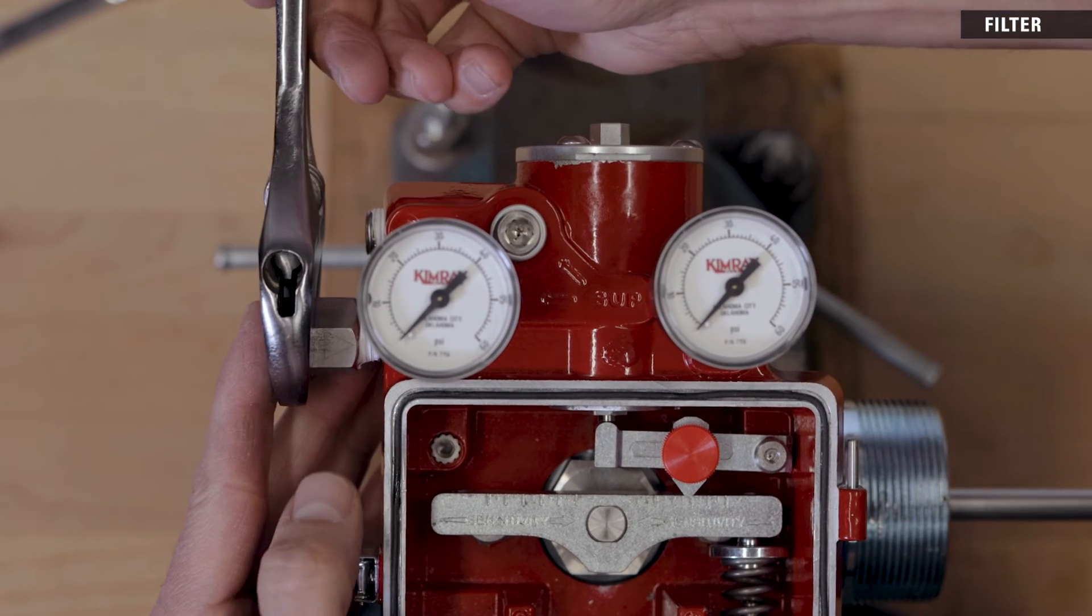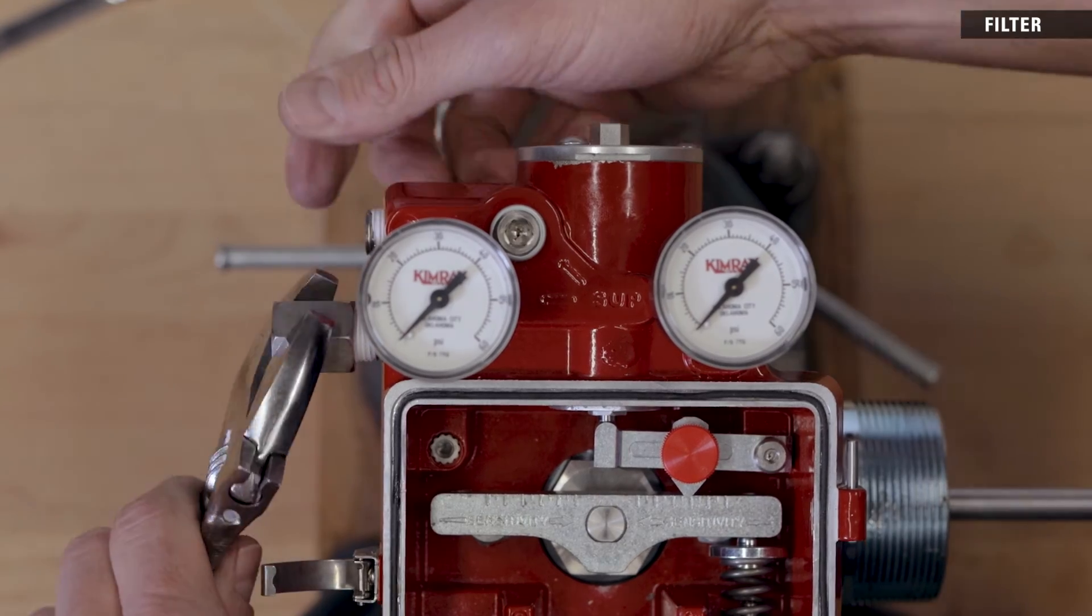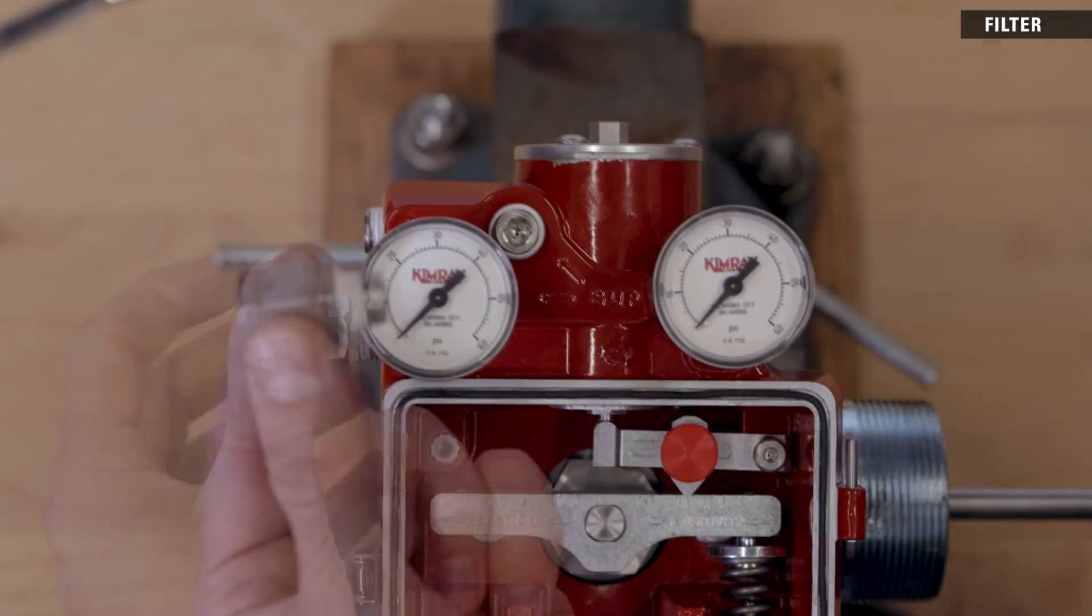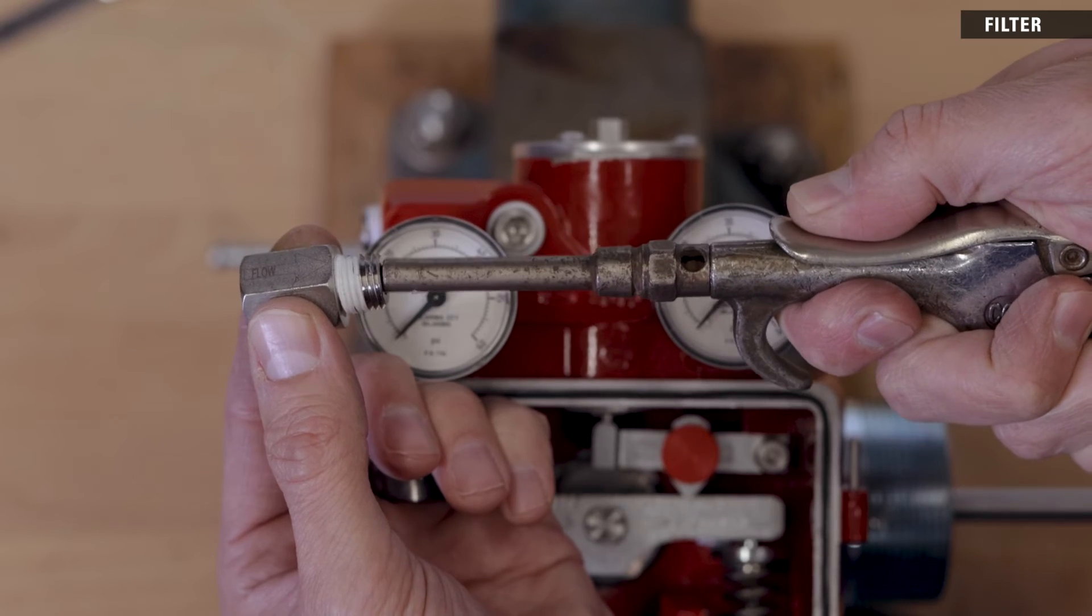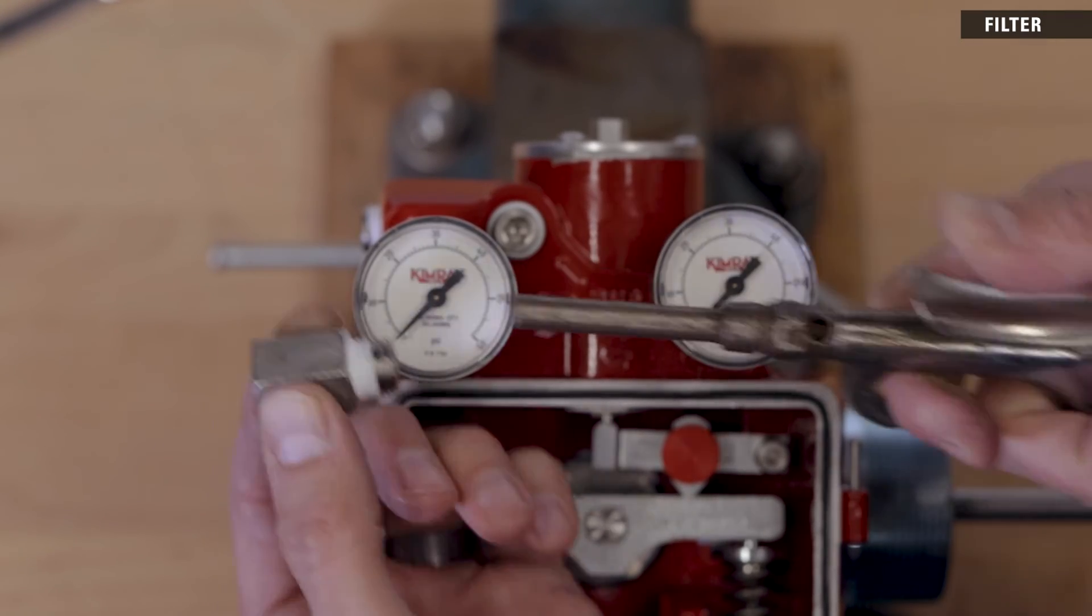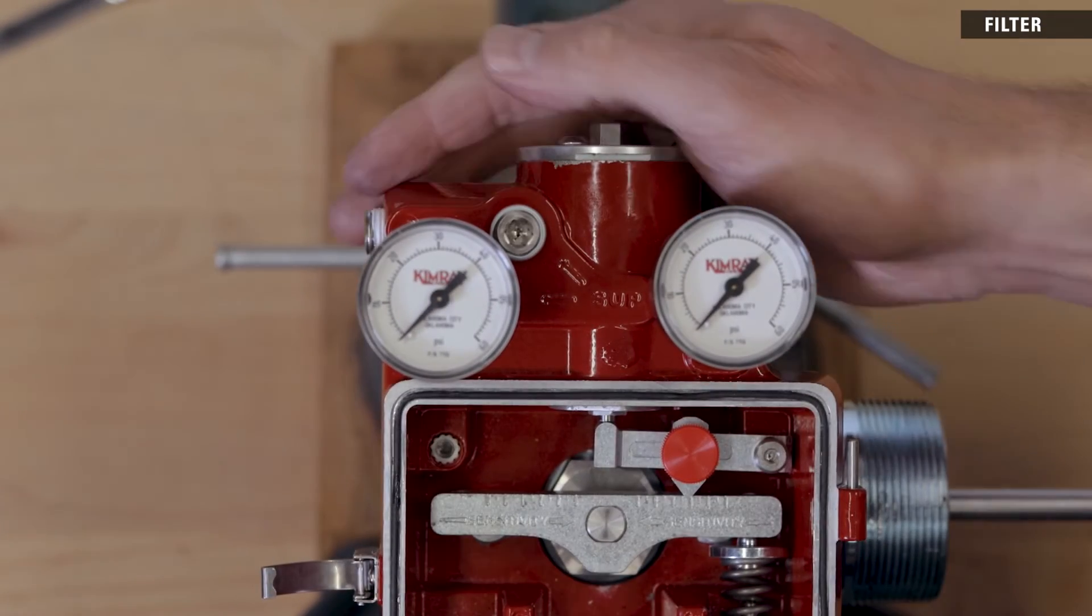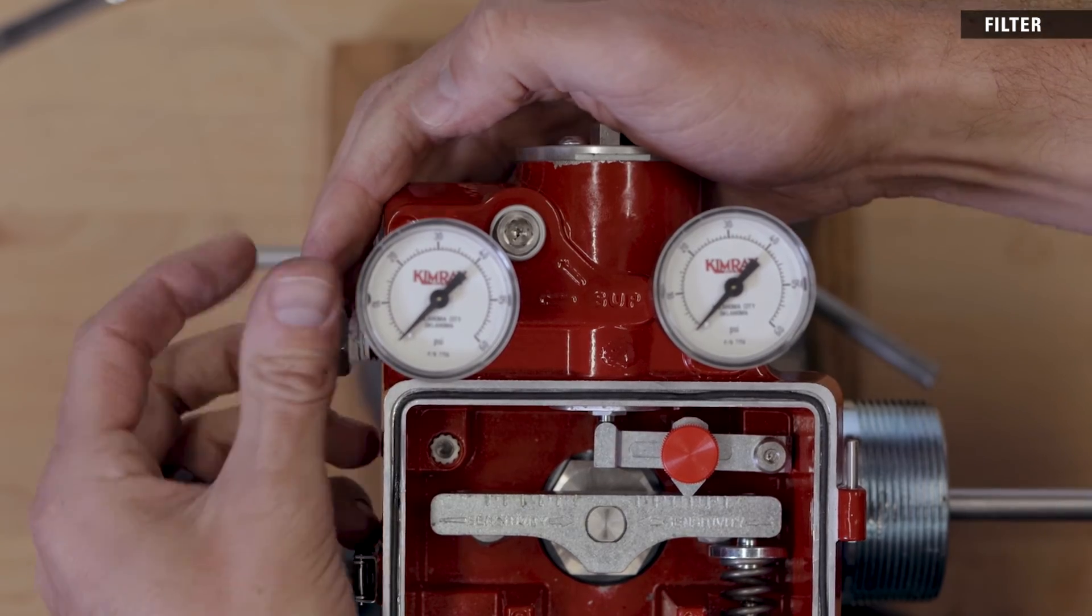Remove the filter using an adjustable wrench. Clean out the filter element using compressed air in the hole in the male connection end. Apply thread tape then reinstall the filter into the enclosure.